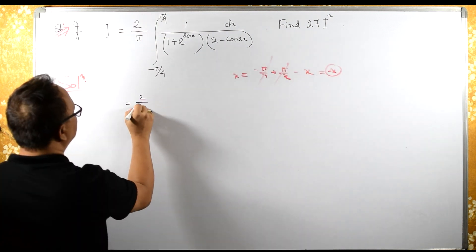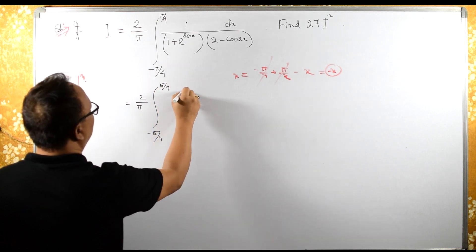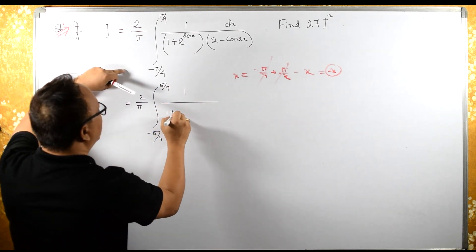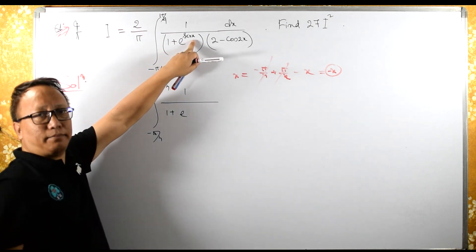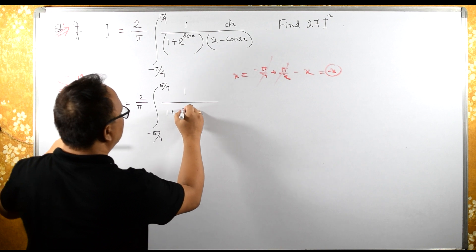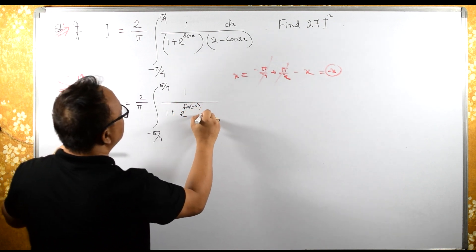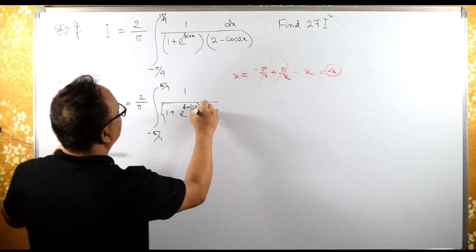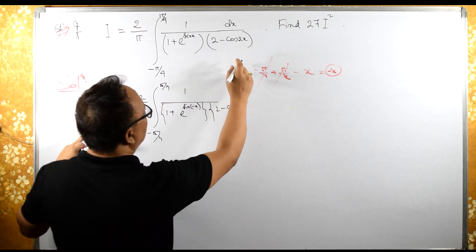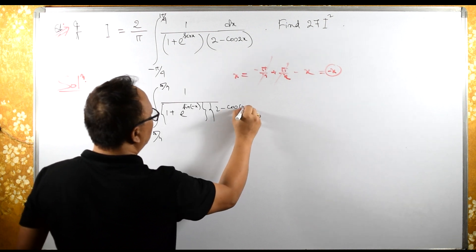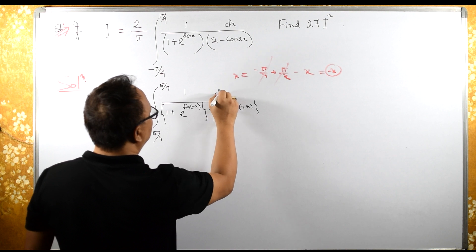So we get 2 by pi, integral from minus pi by 4 to pi by 4, 1 upon 1 plus e raised to the power of sine of minus x, and then 2 minus cosine of 2 times minus x, dx.